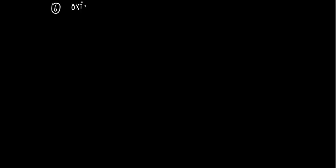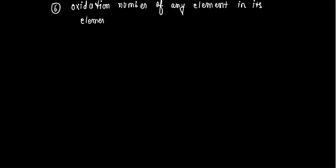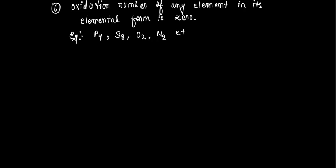If there is any element in its elemental form, its oxidation number will be 0. Elemental form means only that element is present with no other element. For example, in P₄, each phosphorus is attached to itself only, so the oxidation number of phosphorus is 0. Similarly for S₈, O₂, N₂ - in all these cases, the oxidation number will be equal to 0.